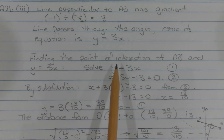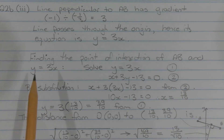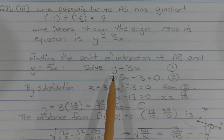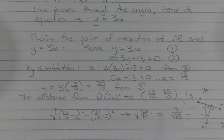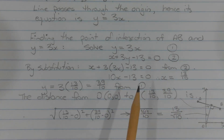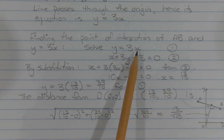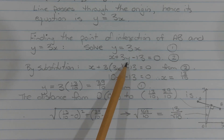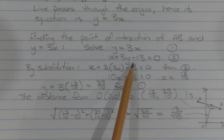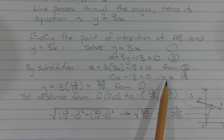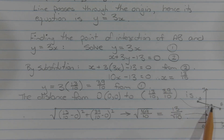Next, find the point of intersection of interval AB and the line y equals 3x by solving simultaneously y equals 3x and x plus 3y minus 13 equals 0. Substituting 3x from equation 1 into y in equation 2: x plus 3 times 3x minus 13 equals 0. Simplifying the left-hand side gives 10x minus 13 equals 0. Solving for x gives x equals 13 over 10.